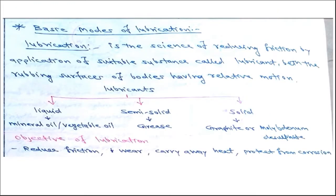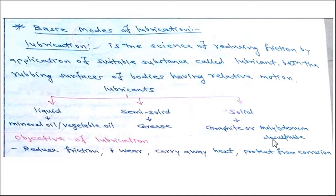Before going into bearing details, we look at lubrication. Lubrication is the science of reducing friction by application of a suitable substance called lubricant between the rubbing surfaces of bodies having relative motion. Lubricants are of three types: liquid lubricant (mineral oil or vegetable oil), semi-solid lubricant (grease or resin), and solid lubricant (graphite or molybdenum disulfide). The basic objectives of lubrication are to reduce friction, minimize wear, and carry away the heat generated by relative sliding motion.